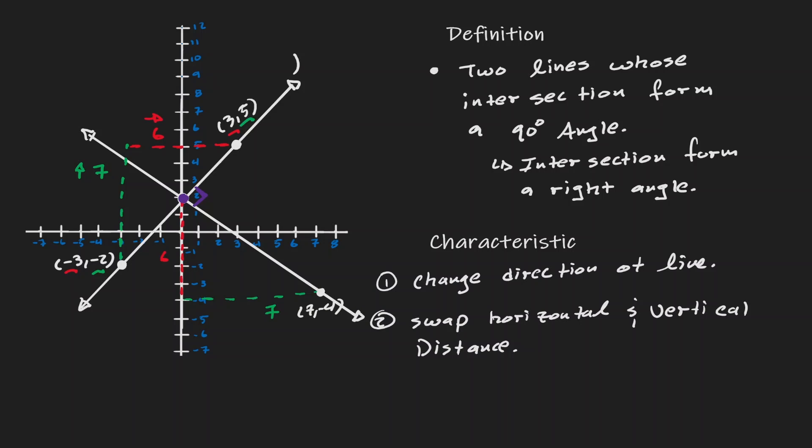So if we call this line 1 and we call this line 2, notice that performing these two characteristics, we have done something to the slopes of the line.